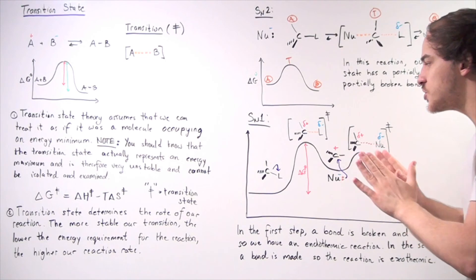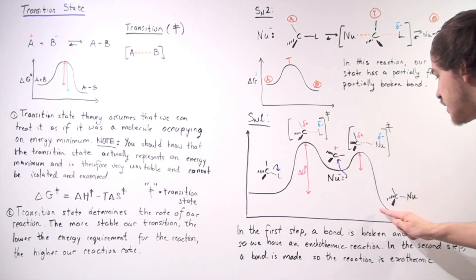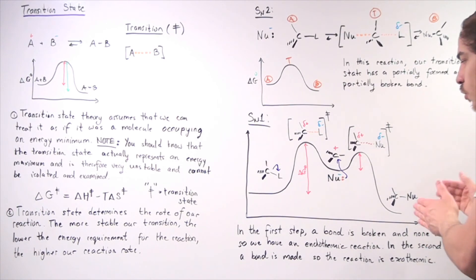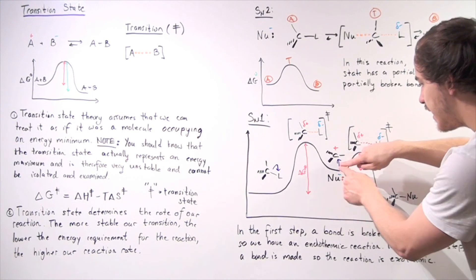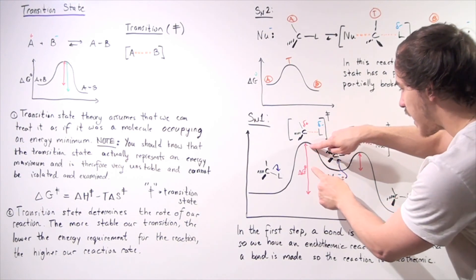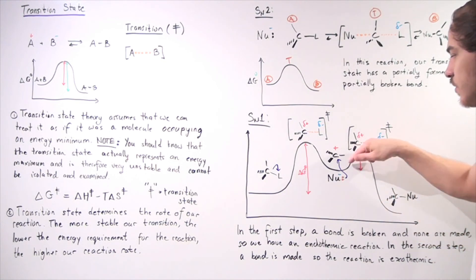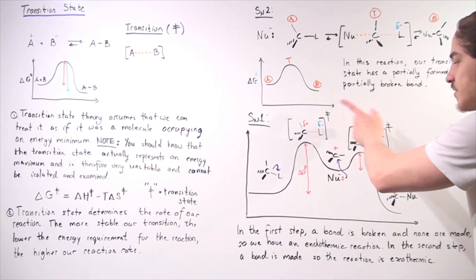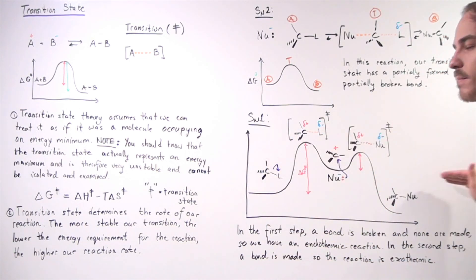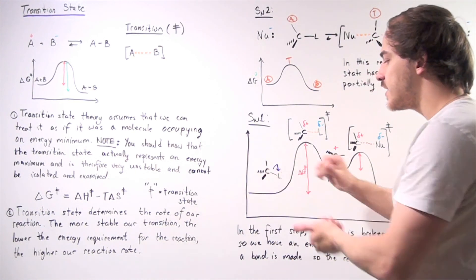These two transition states are energy maxima and cannot be isolated. We can also consider the reverse direction, where the activation energy is different for each of the two humps. Going backward through the second hump and then the first hump, the first reverse step is endothermic and the second reverse step is exothermic. Altogether, the entire reverse reaction is endothermic, because we go from something lower in energy to something higher in energy.